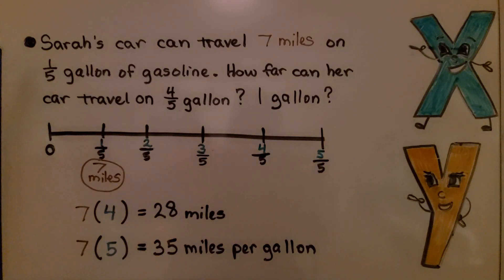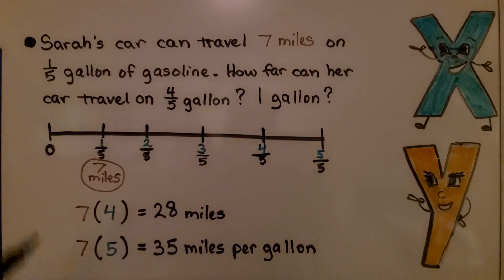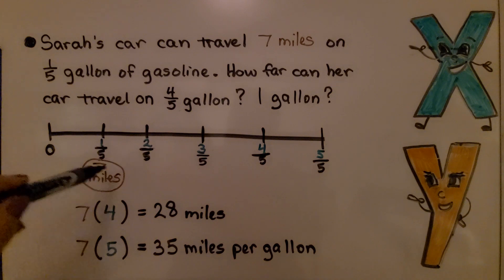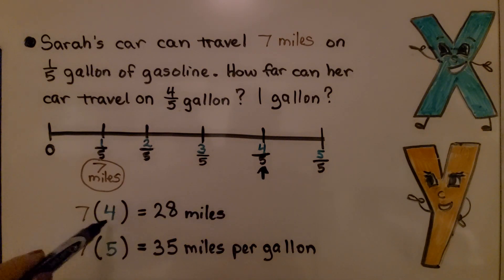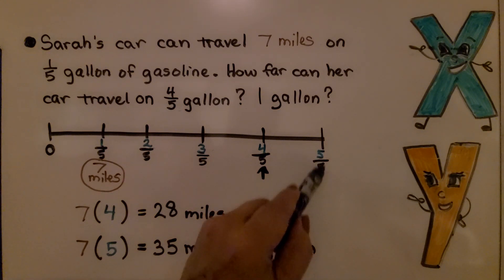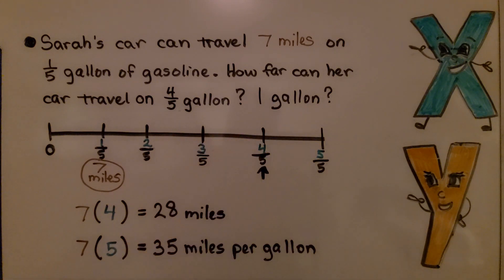Sarah's car can travel seven miles on one-fifth gallon of gasoline. How far can her car travel on four-fifths gallon or one gallon? We make a bar split into fifths — one-fifth is seven miles. Four-fifths must be seven times four, which is 28 miles. Five-fifths equals one whole gallon, which is seven times five, equaling 35 miles per gallon.